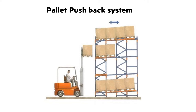By default, the system operates on Last In First Out (LIFO). This system is designed to store pallets of multiple high and multiple deep. Each level shall be dedicated to one type of SKU only.